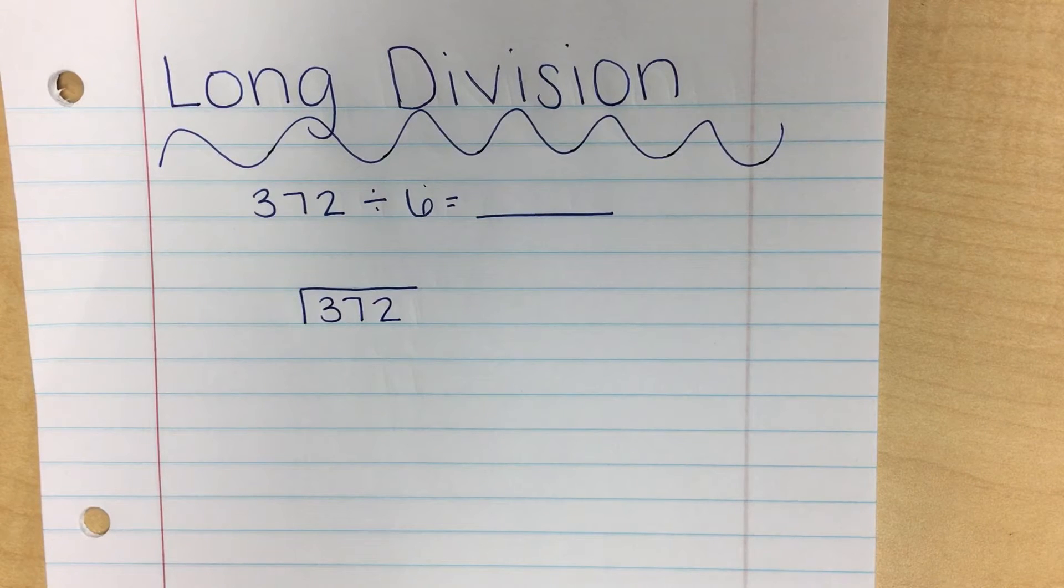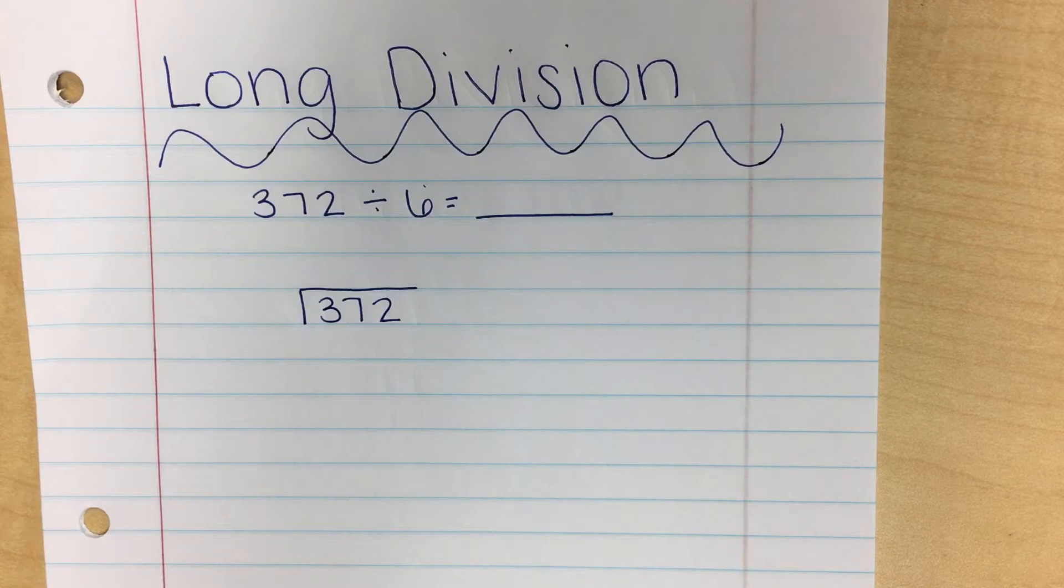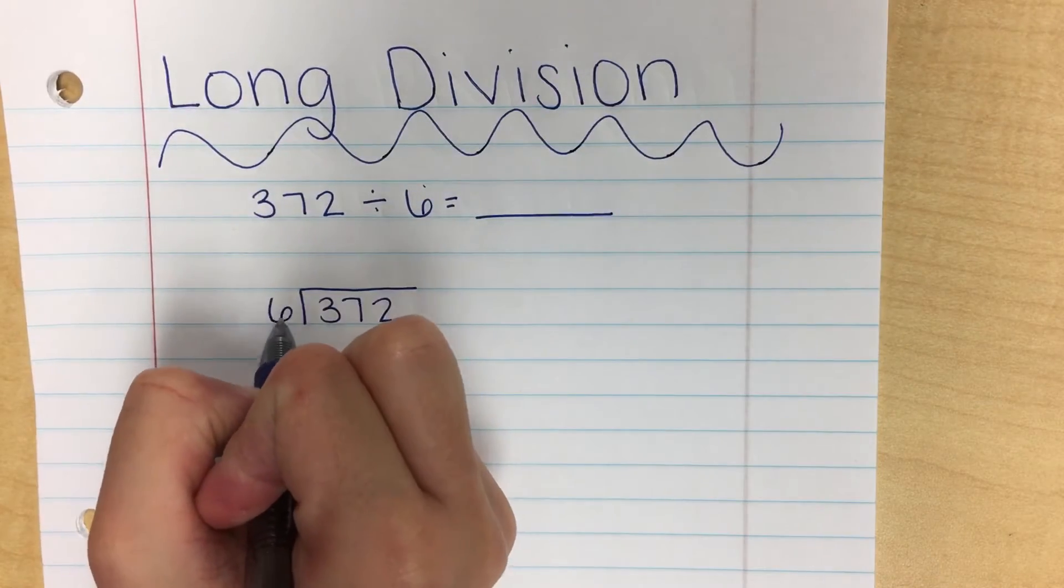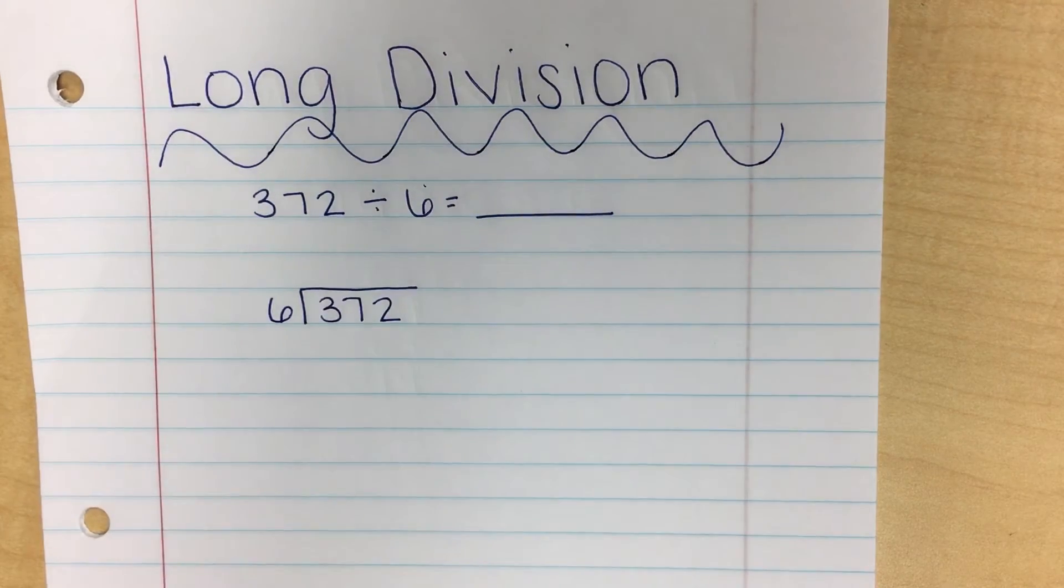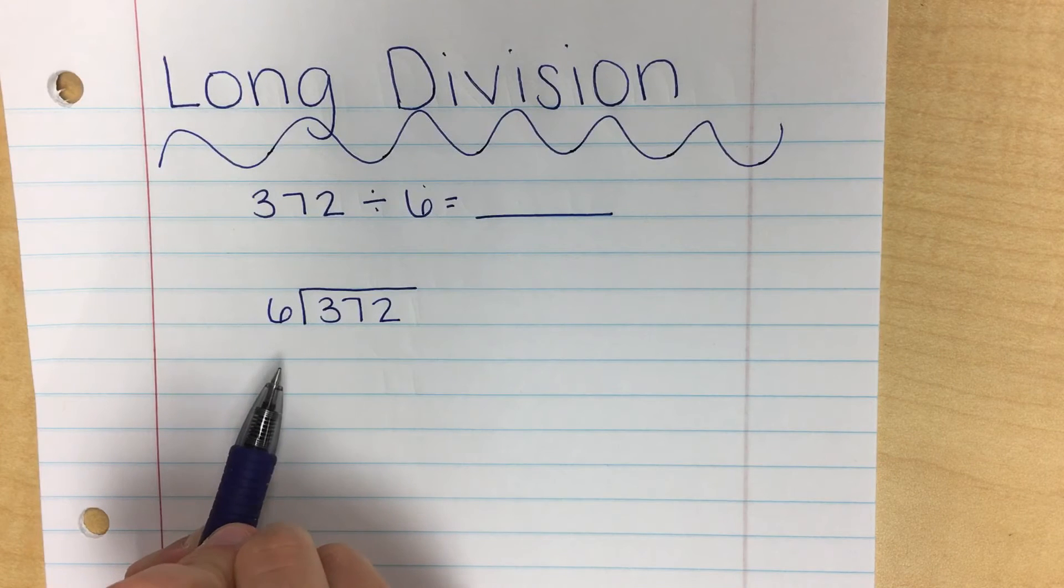Now, we're taking 372, and we are dividing it by 6. 6 is the smaller number, it's what we're dividing by, and we call that number the divisor. We're going to write 6 on the outside of the box. So now we have our long division problem set up.